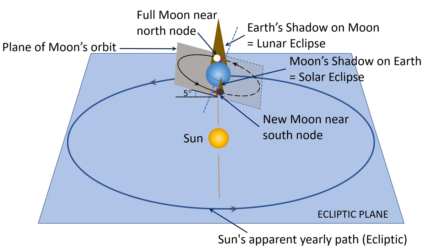First of all, for an eclipse to take place, the Moon has to be aligned with the Sun and the Earth in the ecliptic plane — that is, all three have to be in one straight line. But since the Moon's orbit is inclined to the Earth's orbit by about 5 degrees, the Sun, Moon, and Earth are not always aligned in the ecliptic plane.